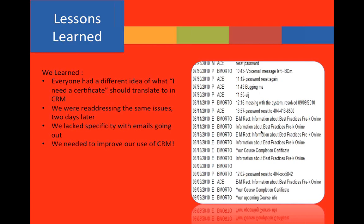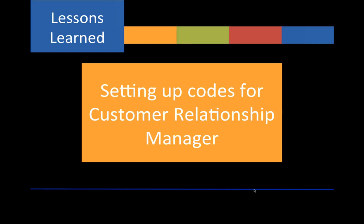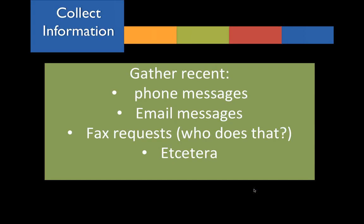We needed a way to clean up our reports so that they'd actually be helpful to us. For example, someone might have logged just that we got a phone call and they're following up, but we don't know if that issue has been addressed. We had no way of tracking whether something had been completed or not, so we needed to improve our use of Customer Relationship Manager. Here's what we did: we set up codes for Customer Relationship Manager that were specific to our program. We gathered recent phone calls, email messages, fax messages, and every other point of contact we received, and separated them.